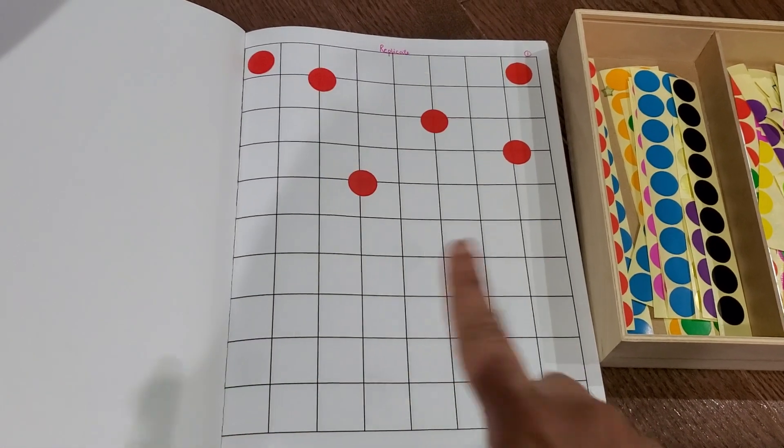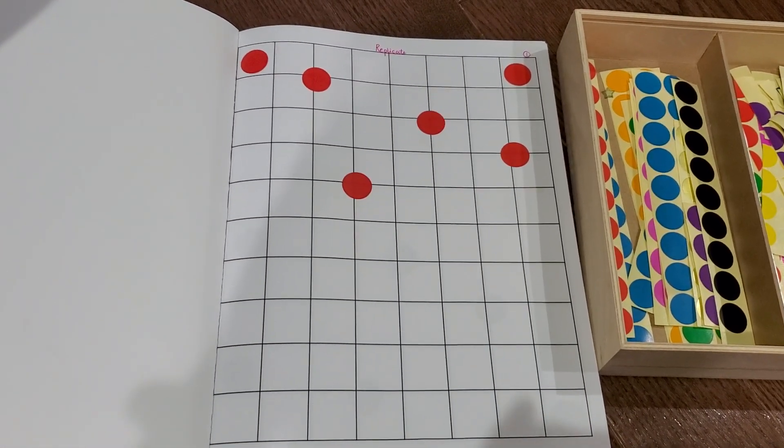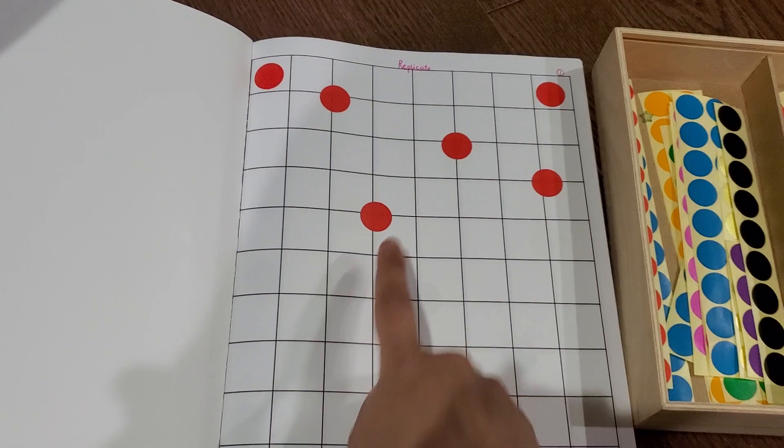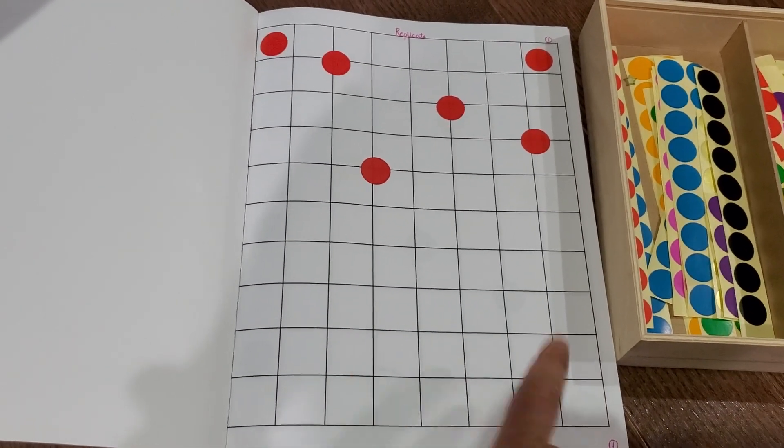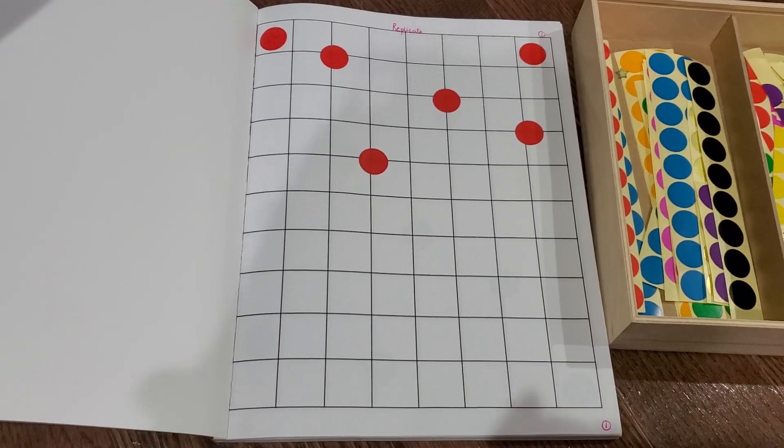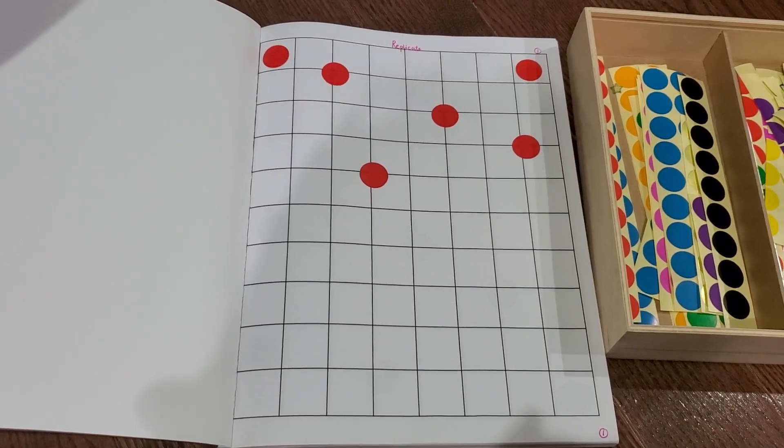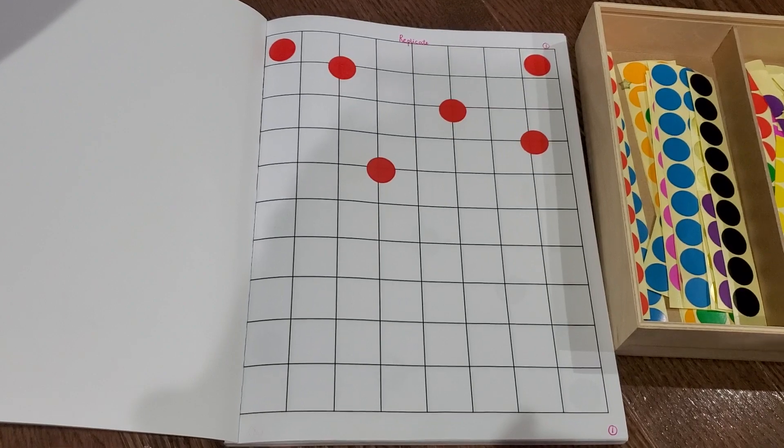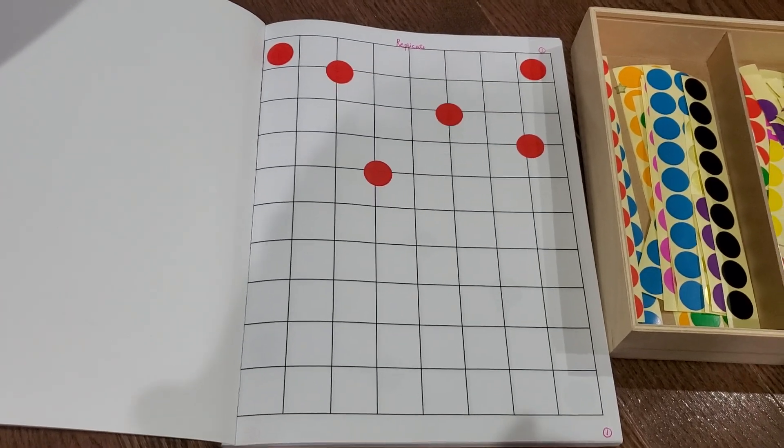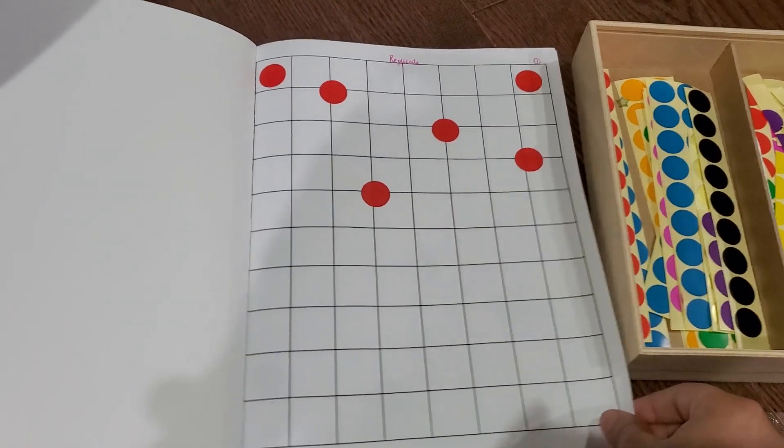Once you see the spots here where I've put the dots, Vivan has to replicate the same thing and do it here. So you have 10 blocks in total. I have used five and the other five are left for him to replicate. That's option number one.